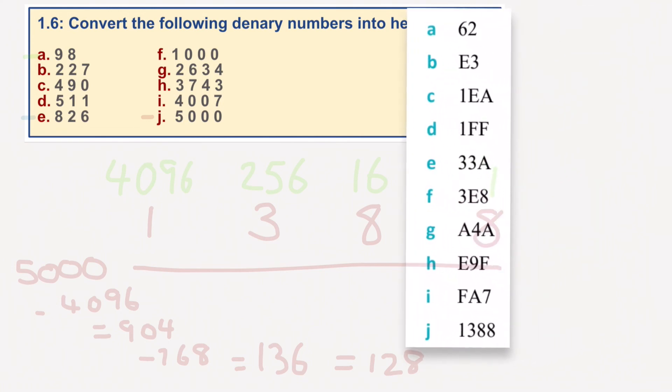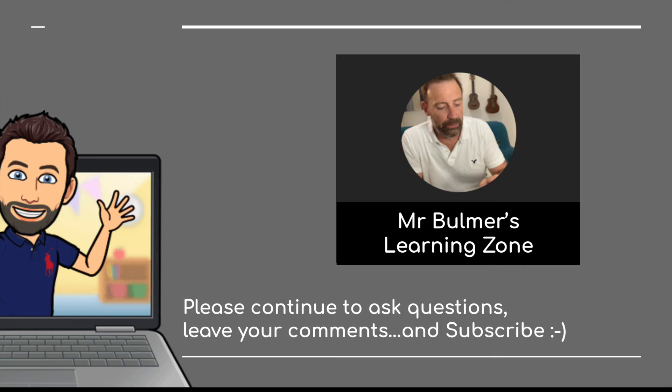And we've got 62, E3, 1EA, 1FF, 33A, 3EA, A4A, E9F, FA7, 1388. Okay, that's it for this video. Please tune in for 1.7 coming up shortly. Thank you very much indeed.